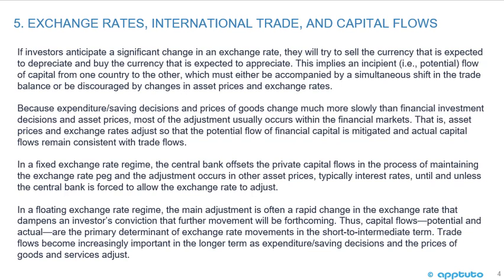In a fixed exchange rate regime, the central bank offsets private capital flows in the process of maintaining the exchange rate peg, and the adjustment occurs in other asset prices — typically interest rates — until the central bank is forced to allow the exchange rate to adjust. In a floating exchange rate regime, the main adjustment is often a rapid change in the exchange rate that dampens an investor's conviction that further movement will be forthcoming.